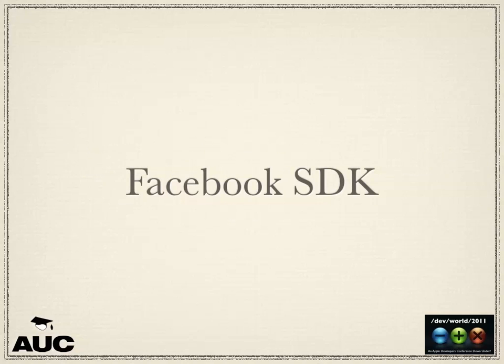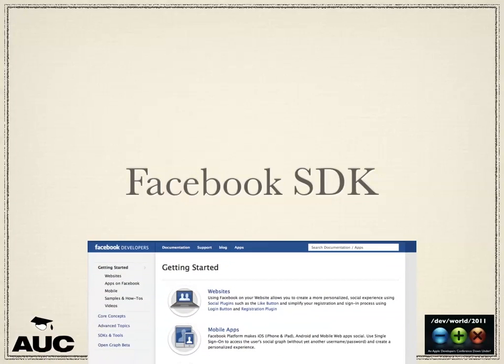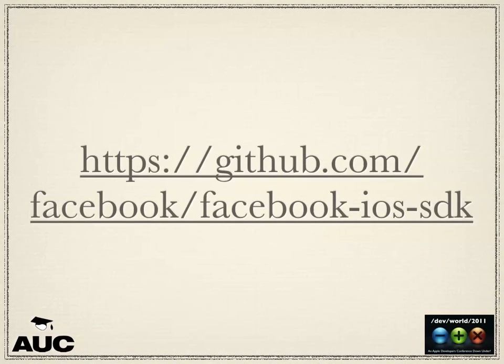Moving to the major social networks — first up is the Facebook SDK. If you go to developers.facebook.com you get a fairly friendly page. I actually quite like the Graph API. They've got a really cool online tester where you can figure out exactly what data you get back without having to launch an app. The iOS SDK for Facebook is open source — you can get it from GitHub.